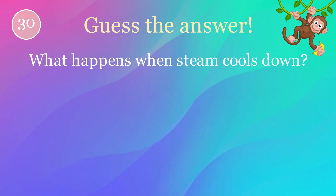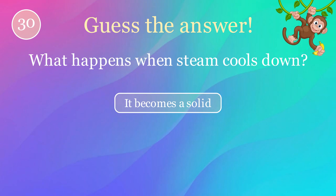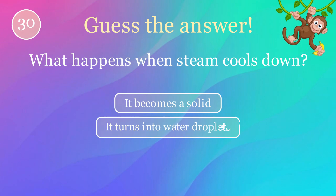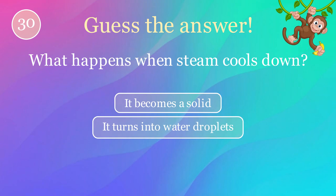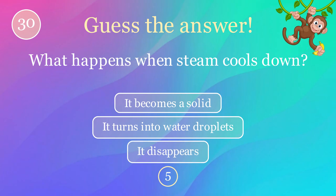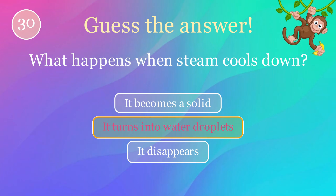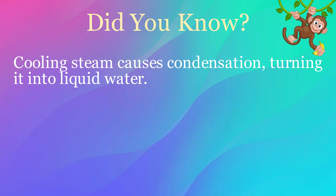What happens when steam cools down? Options: it becomes a solid, it turns into water droplets. The correct answer is it turns into water droplets. Here's an interesting fact: cooling steam causes condensation, turning it into liquid water.